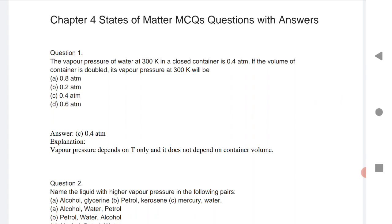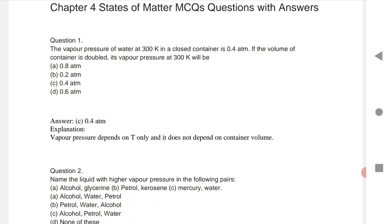So the answer is the same, option C. Why? Because vapor pressure depends on temperature only and doesn't depend upon the volume. If you are increasing the volume, see here at 300K the vapor pressure was 0.4. But if it doubles the volume but temperature is same, if temperature is same, pressure is same.